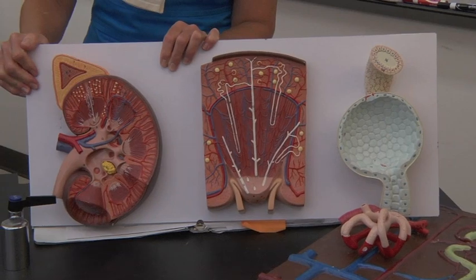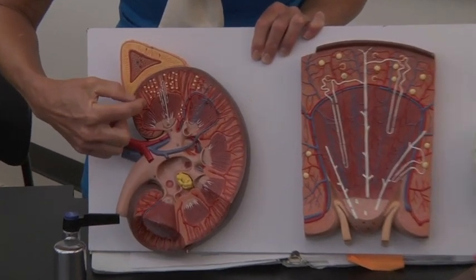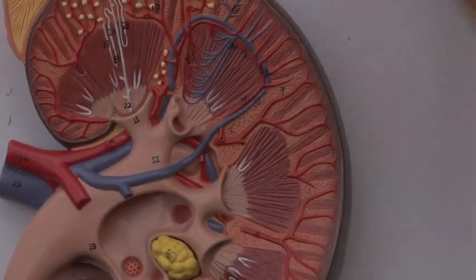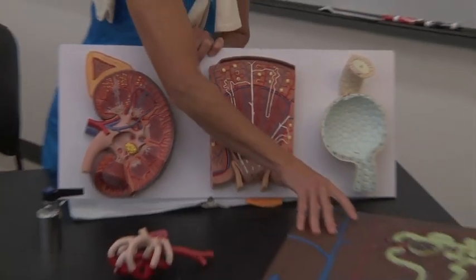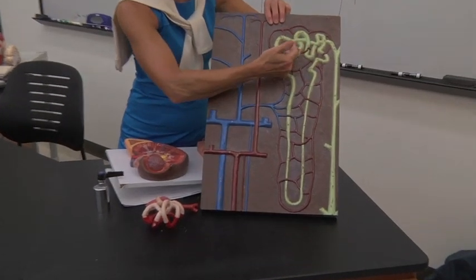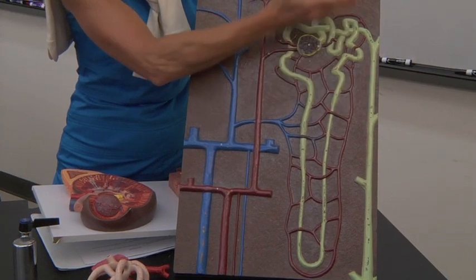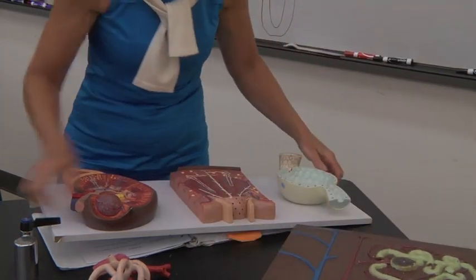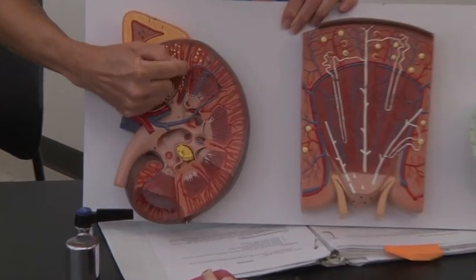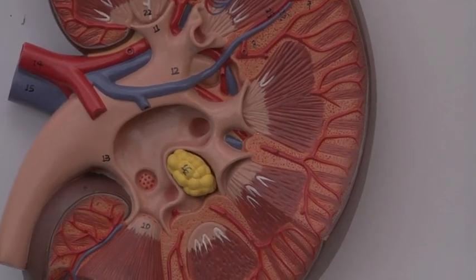You also have listed in your book that you need to know renal columns. Renal columns are simply when you have this cortex region — which is mainly all of the curly tubes: the distal convoluted tubule, the proximal convoluted tubule, the Bowman's capsule — that's all in that cortex region. Sometimes that cortex will dip down in between the lobules, and where you have the cortex region coming down in between the lobules, that's what we're going to call the renal columns.